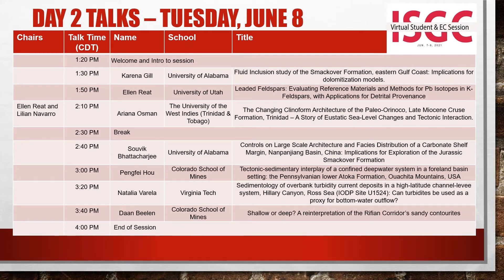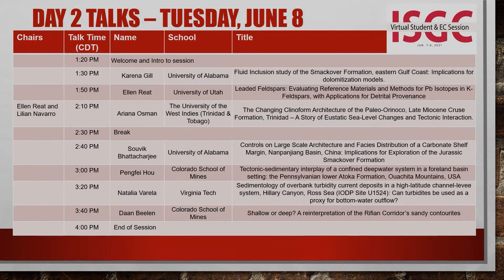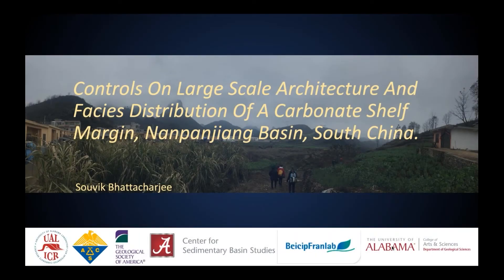Our next talk is from Suvik Bhattacharji from the University of Alabama, presenting on controls on large-scale architecture and facies distribution of a carbonate shelf margin in the Nanpengying Basin of China, with implications for exploration of the Jurassic Smackover formation. Hi everyone, my name is Suvik Bhattacharji. I'm a PhD student at the University of Alabama, and today I will be presenting on a part of my PhD research.